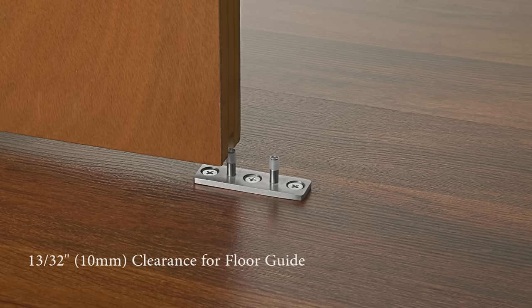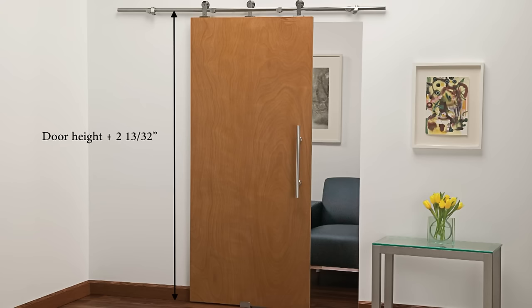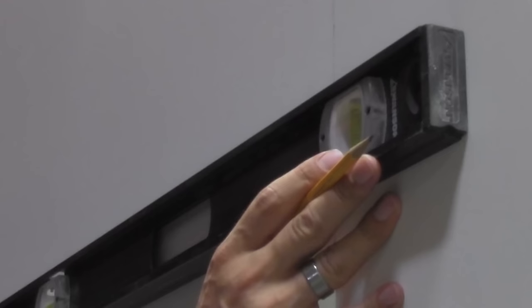To prep the wall for the hardware installation, first you'll need to measure for your brackets. The door needs 13/32nds of an inch clearance above the floor to pass over the floor guide, so we'll take that into consideration for our overall height. Add 2 inches to the 13/32nds of an inch off the floor for a total of 2 and 13/32nds inches plus the door height.